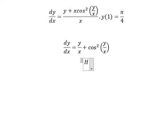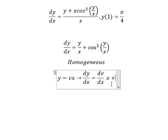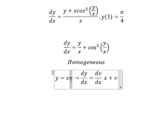This is a homogeneous equation, so I will use the substitution y equals vx. Next, if we differentiate both sides, we have dy/dx equals dv/dx multiplied by x plus v, because the first derivative of x gives us one.